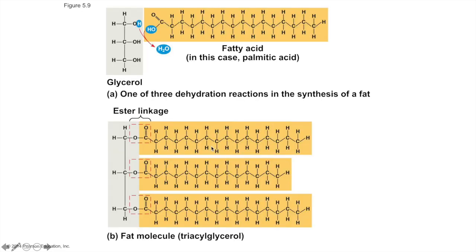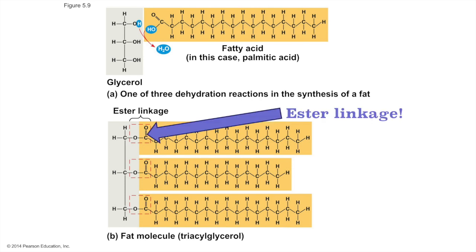Here we see a fat being produced. On the left side, in the gray shape, is glycerol, which is a three-carbon alcohol with three hydroxyl groups. Those hydroxyl groups are a place for attachment of the fatty acids. The carboxyl group of the fatty acid backs up to the hydroxyl group, and the OH in the carboxyl combines with the H on the glycerol hydroxyl, and — one dehydration reaction later — a water molecule is released and an ester linkage forms between the fatty acid and the glycerol molecule.